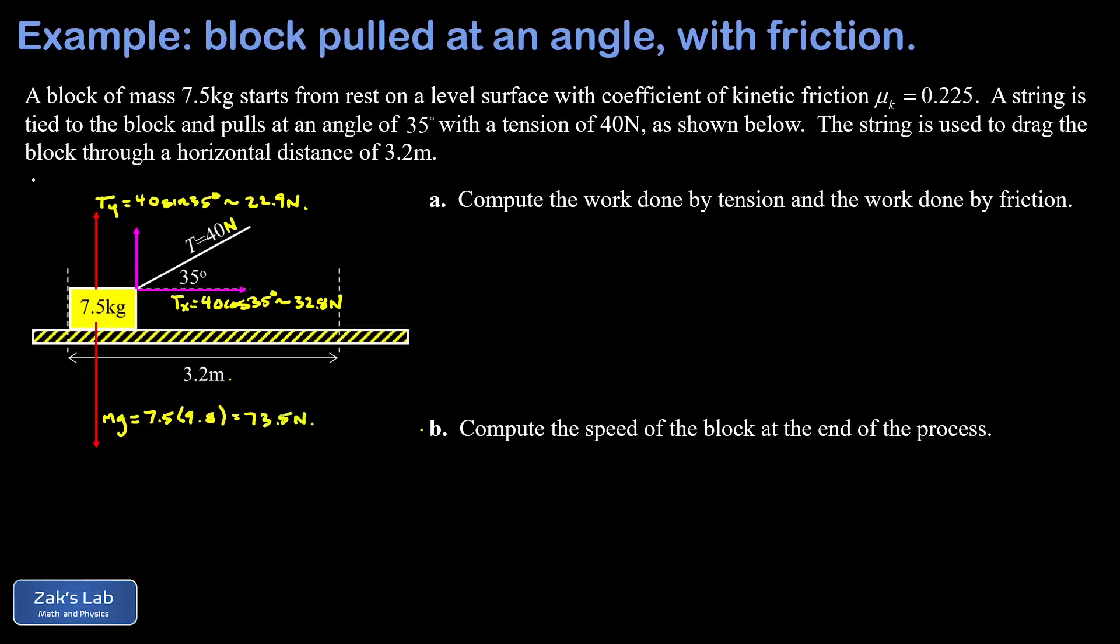Now again, one of the most common mistakes here is to immediately say that the normal force is equal to the same number as the weight. But in this problem it's less than the weight, and it's because the upward component of tension is cooperating with the normal force to balance the force of gravity.